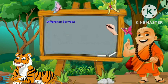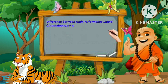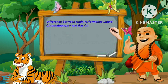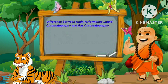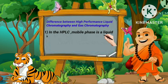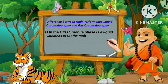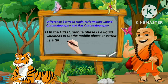Difference between high performance liquid chromatography and gas chromatography. First, in HPLC the mobile phase is a liquid, whereas in GC the mobile phase or carrier is a gas.